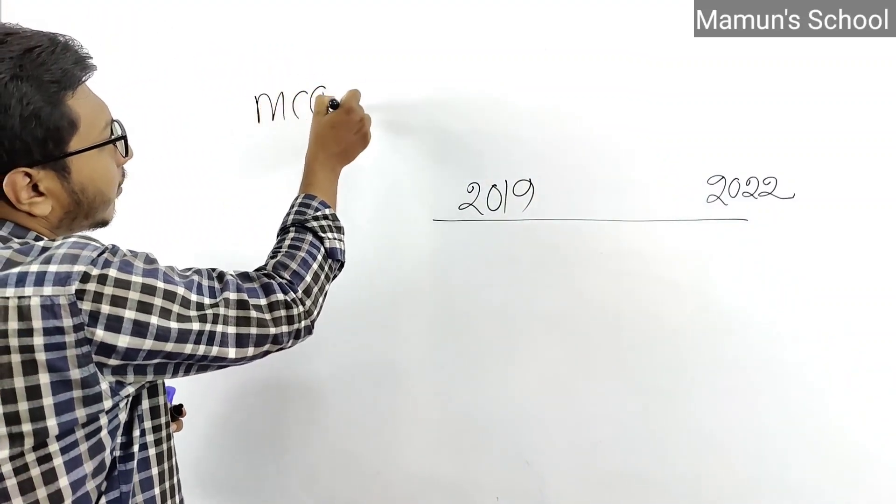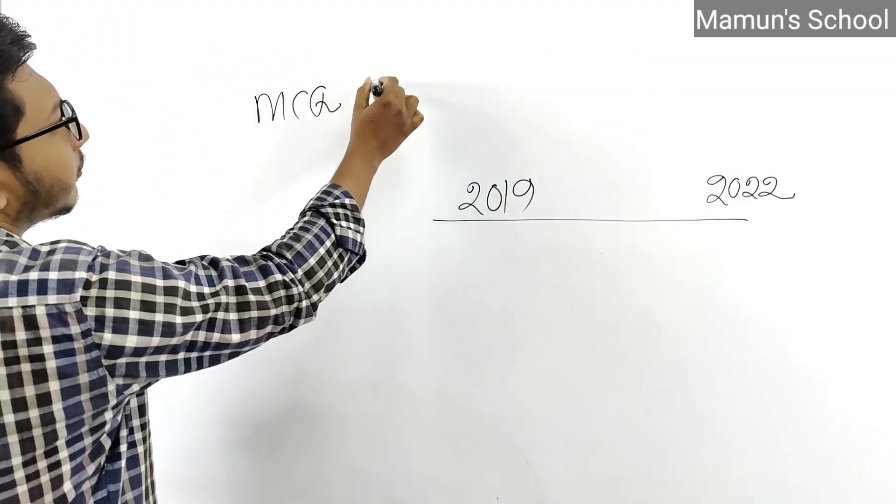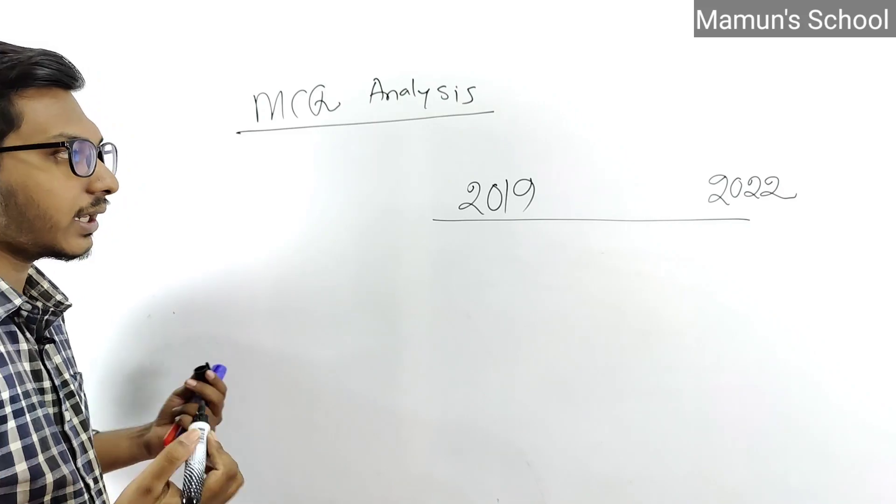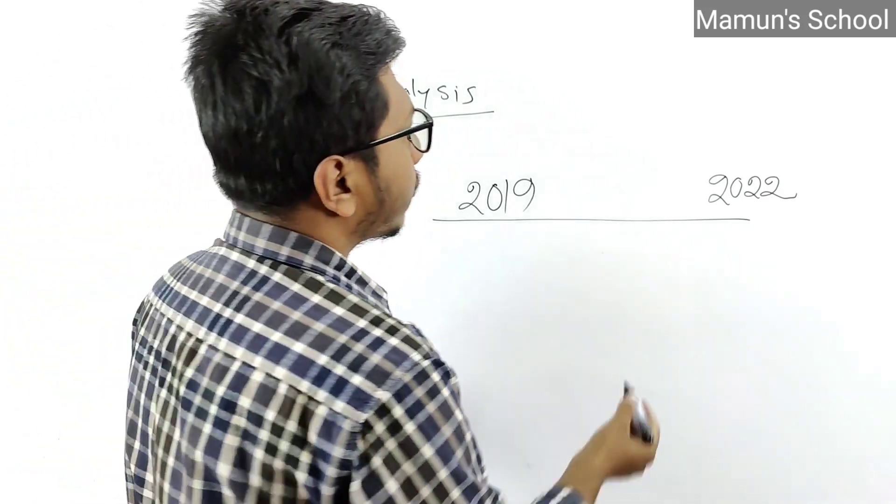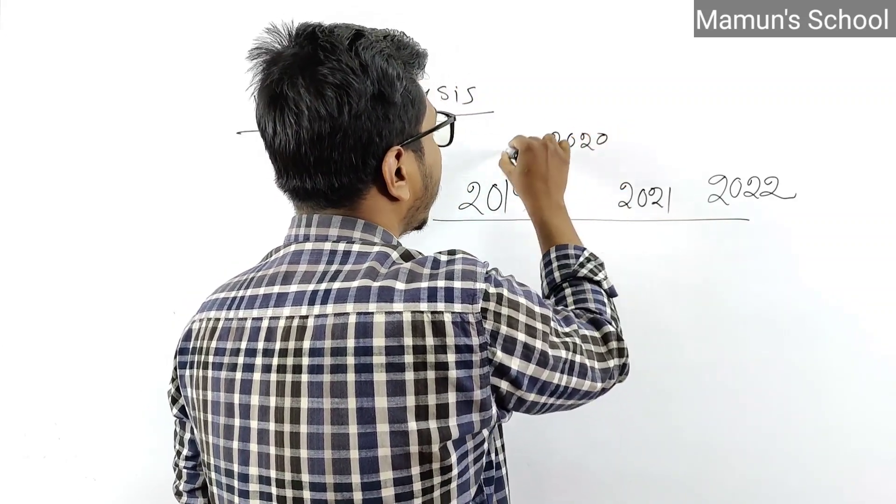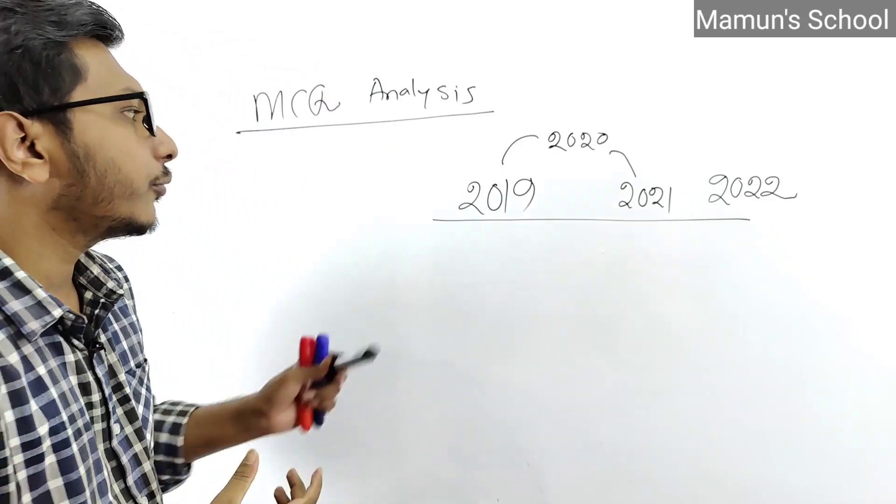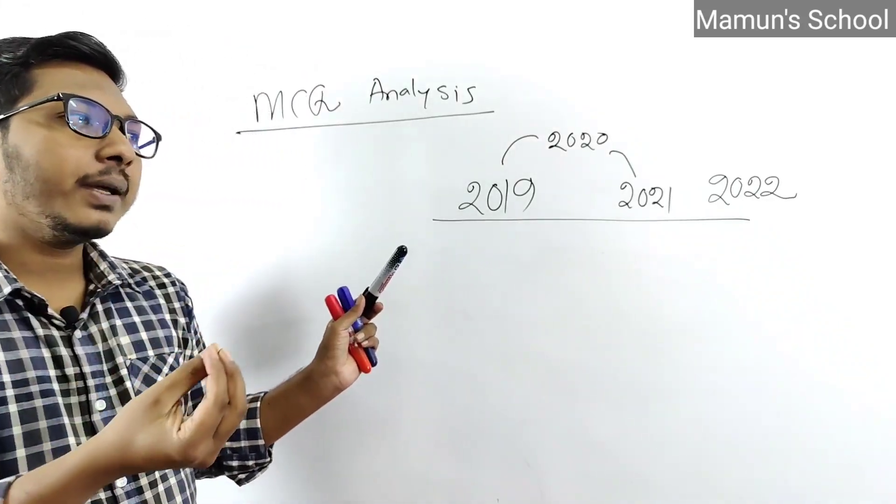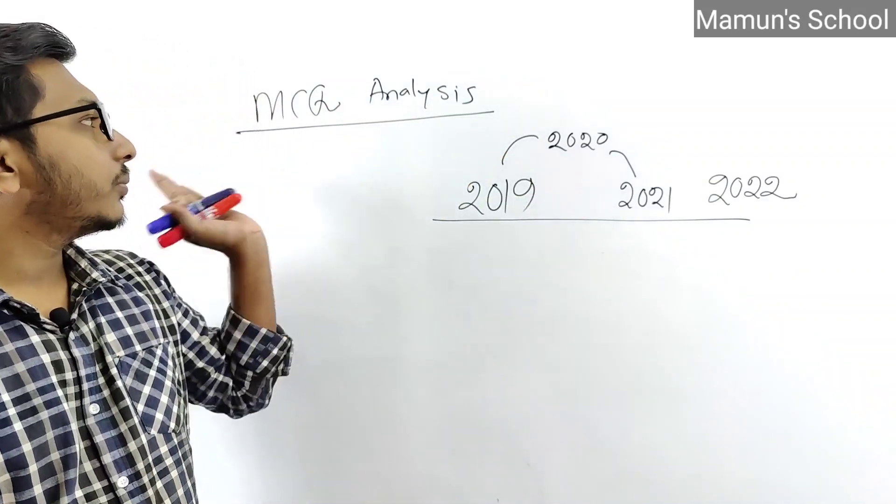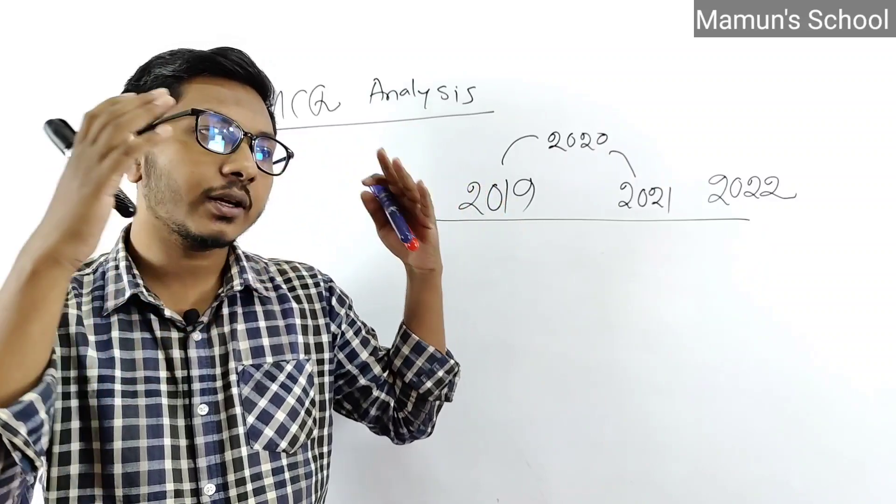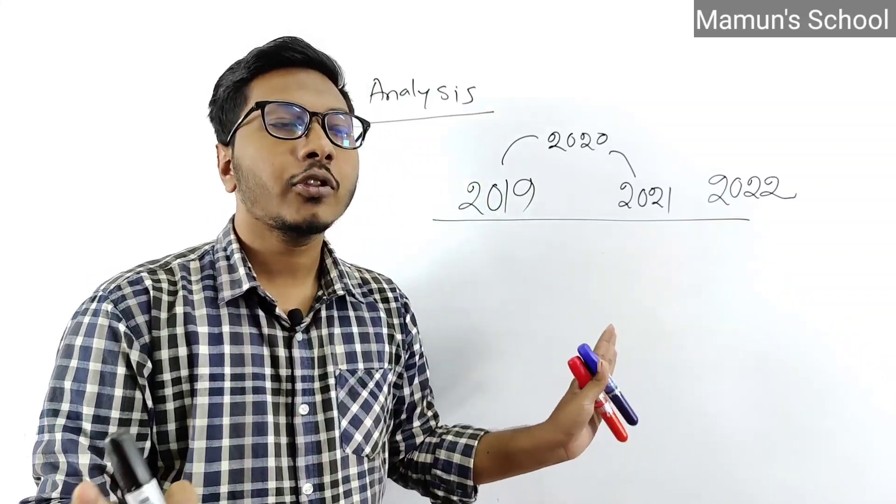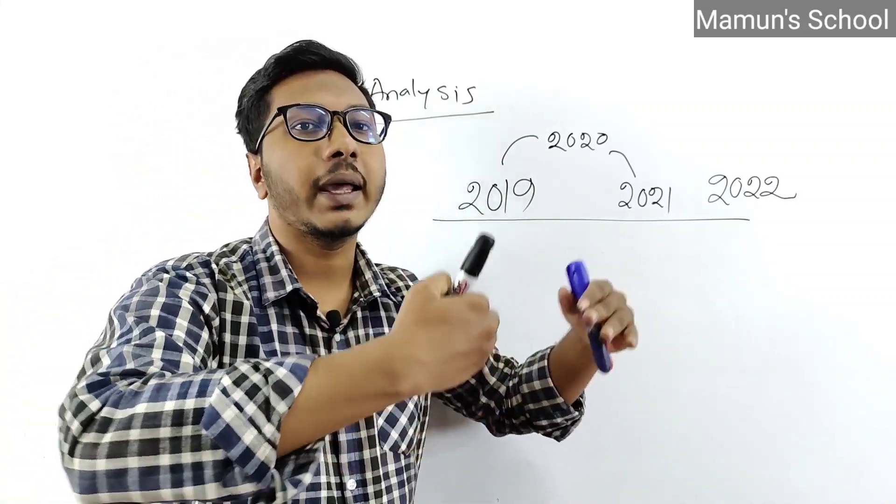When I do the analysis, I show you directly on the board. But in written analysis, I take three questions from 2013, 2019, and 2021 as examples. I analyze each question carefully to show you which topics come up, which chapters appear, and which specific areas are tested repeatedly.